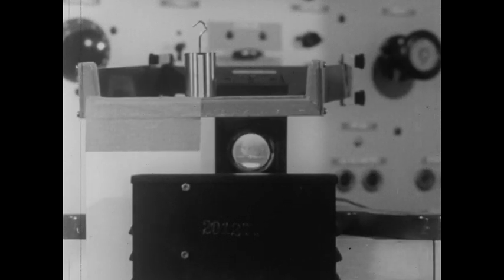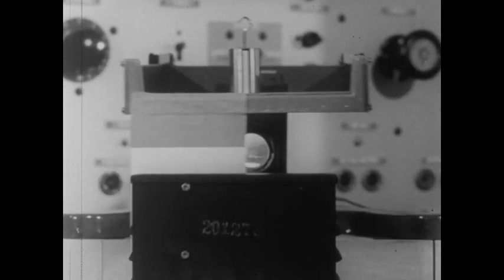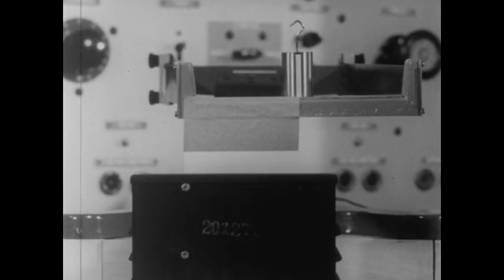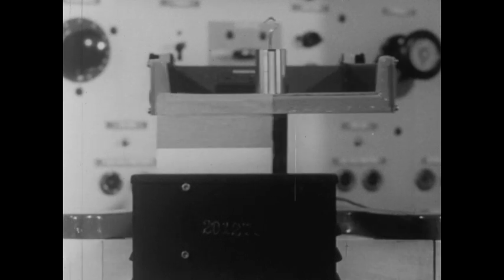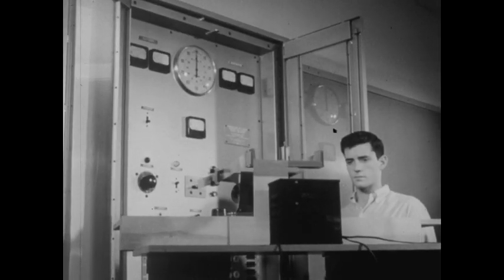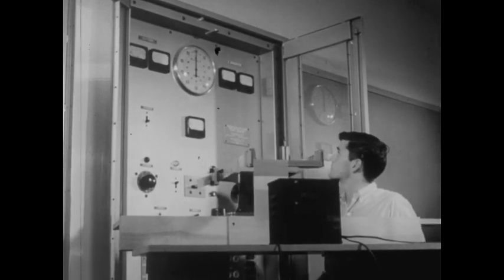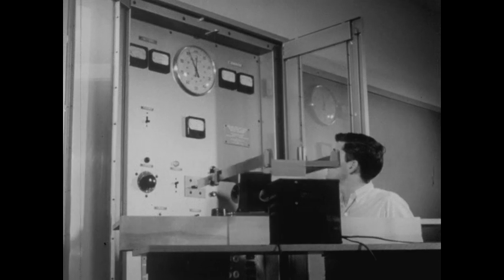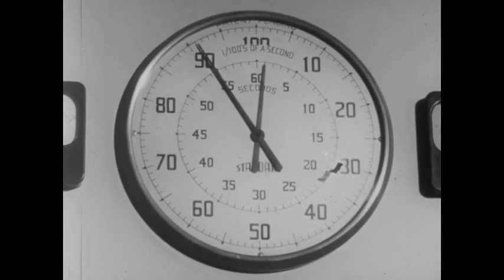The edge of the card, lined up with the center of the mass, cuts through the beam of light and activates the photocell. The cell automatically starts and then stops the clock to which it is connected. Now the time intervals will be measured with greater accuracy.